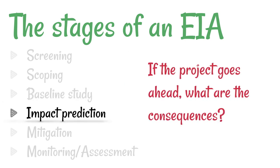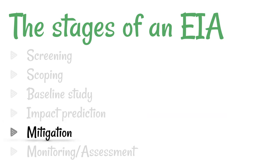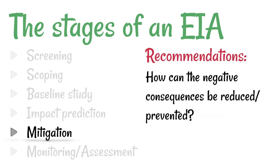Next is the impact prediction. So if we do go ahead with this project, what are the possible consequences? And leading on from that is the mitigation. If we've established what the possible negative consequences are, how could they be reduced or prevented? Also, are there any alternatives? Could we redesign the project slightly so that we could remove these problems?